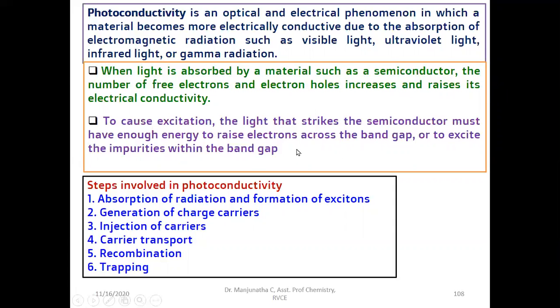To cause the excitation, the light that strikes the semiconductor must have enough energy to raise the electrons across the band gap. Then only you can get free electrons and holes. These are the steps involved in photoconductivity. First, the material absorbs radiation, it may be UV visible, gamma or infrared radiation. That depends on the band gap of the material.